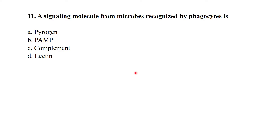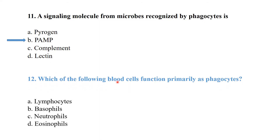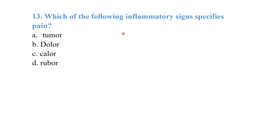The signaling molecule from microbes recognized by phagocytes is called PAMP, which stands for pathogen-associated molecular pattern. Among the following blood cells, neutrophils function primarily as phagocytes.